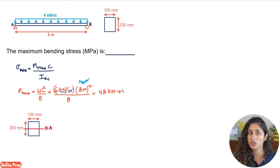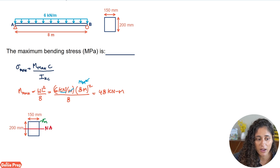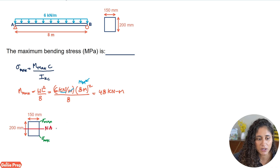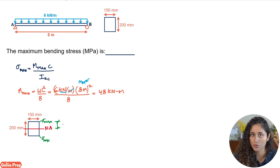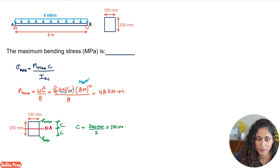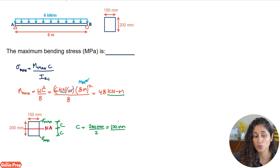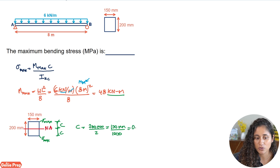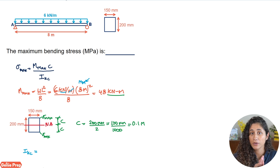Now let's find c. C is the distance from the neutral axis to where we have the maximum bending stress. Because we have a rectangle with symmetry, there are two locations of maximum bending stress: the top outermost fiber and the bottom. The distance c is the same for both — it's just half of the 200 mm height. So c = 200 mm / 2 = 100 mm. We need to convert to meters: 100 / 1000 = 0.1 m.